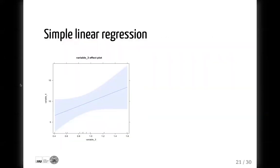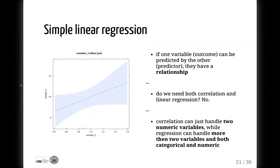Here we see the plot for simple linear regression, and it looks suspiciously similar to the correlation plot. Do we need them both? Actually not — they both do the same thing: show the relationship between two numeric variables. The only difference is that correlation is limited to two numeric variables, while regression can handle more than two numeric variables. Moreover, it can handle categorical variables at the same time.